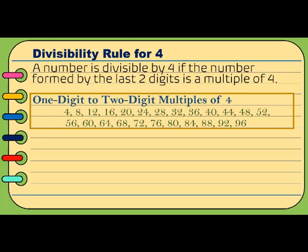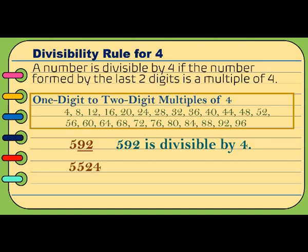For example, 592 ends with 9 and 2. 92 is a multiple of 4. So, the original number which is 592 is divisible by 4. Another example, 5,524 ends with 2 and 4. 24 is a multiple of 4. So, the original number which is 5,524 is divisible by 4.